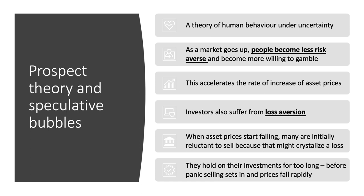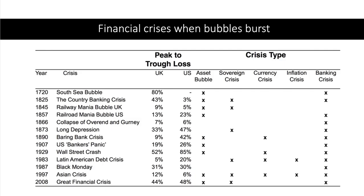However, investors are also prone to something called loss aversion. When prices start falling, many people are initially reluctant to sell because that might crystallize a loss. They fear a loss — they feel the pain of a loss much more than they feel a commensurate gain. So typically investors tend to hold on to their investments for too long before the panic sets in and prices start falling rapidly.